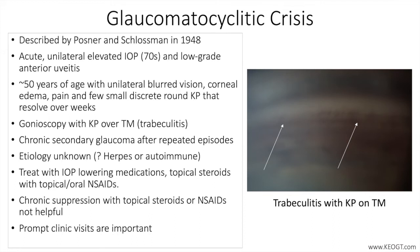Examination of the anterior chamber and IOP between attacks are unremarkable, often leading to confusion and delayed diagnosis. The diagnosis is often one of exclusion, and as such, laboratory testing including viral PCR of aqueous humor for HSV, VZV, and CMV titers may be ordered to exclude infectious uveitis.